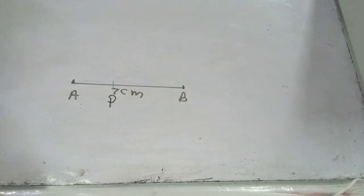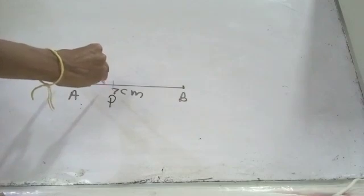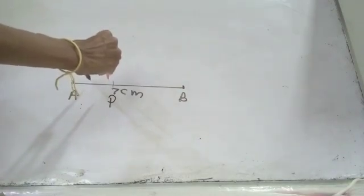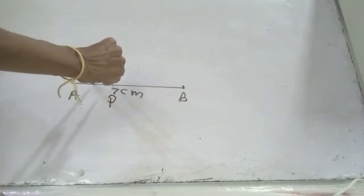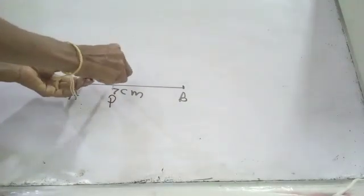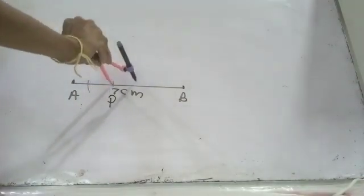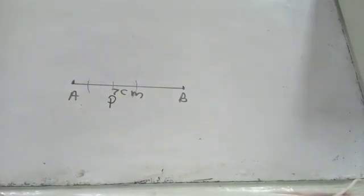Construct the line perpendicular to AB through P. Now, taking the length less than the length AP as the radius and taking P as the center, draw two arcs using the pair of compasses such that they intersect the line segment AB. Draw two arcs.